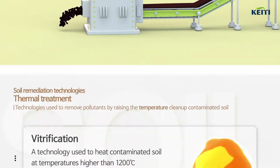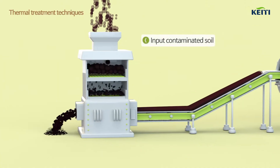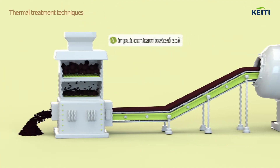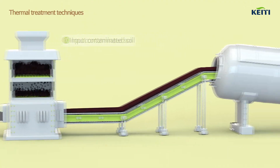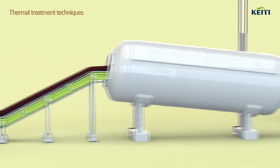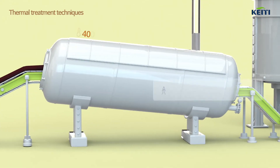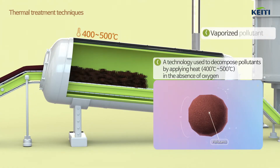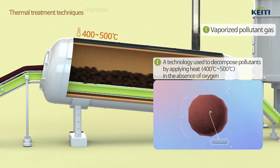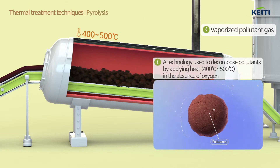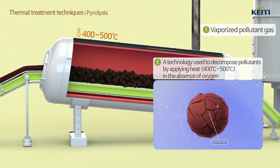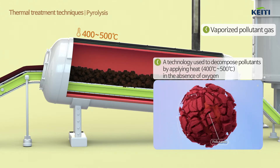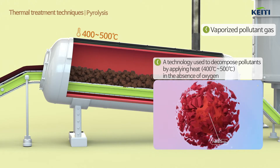Now, let's learn more about pyrolysis, incineration, and vitrification. Pyrolysis puts contaminated soil into an oxygen-free facility and applies heat at 400 to 500 degrees Celsius to decompose and separate the contaminants from the soil.